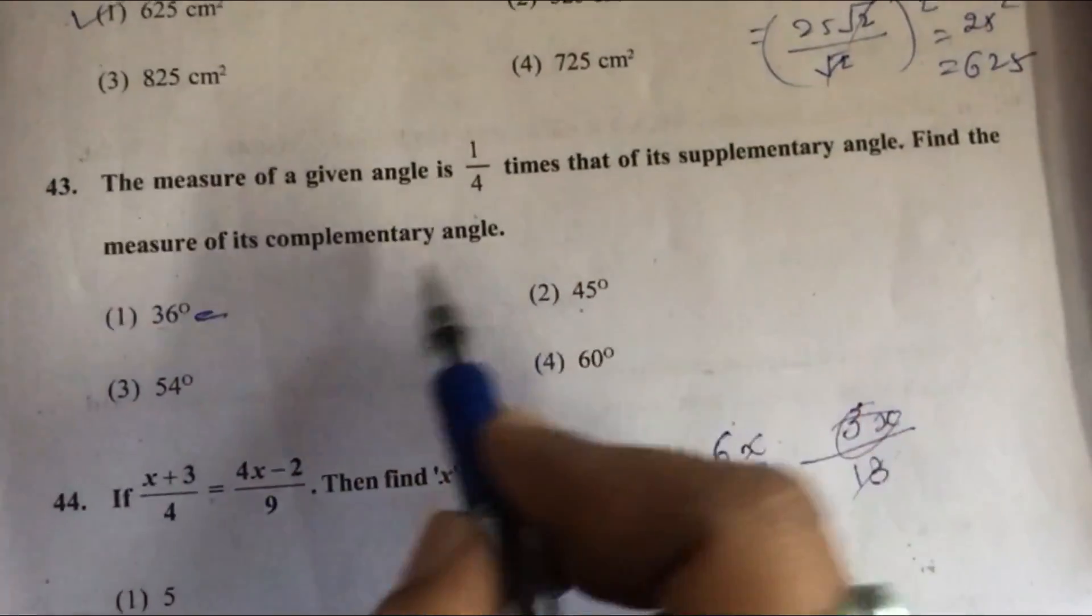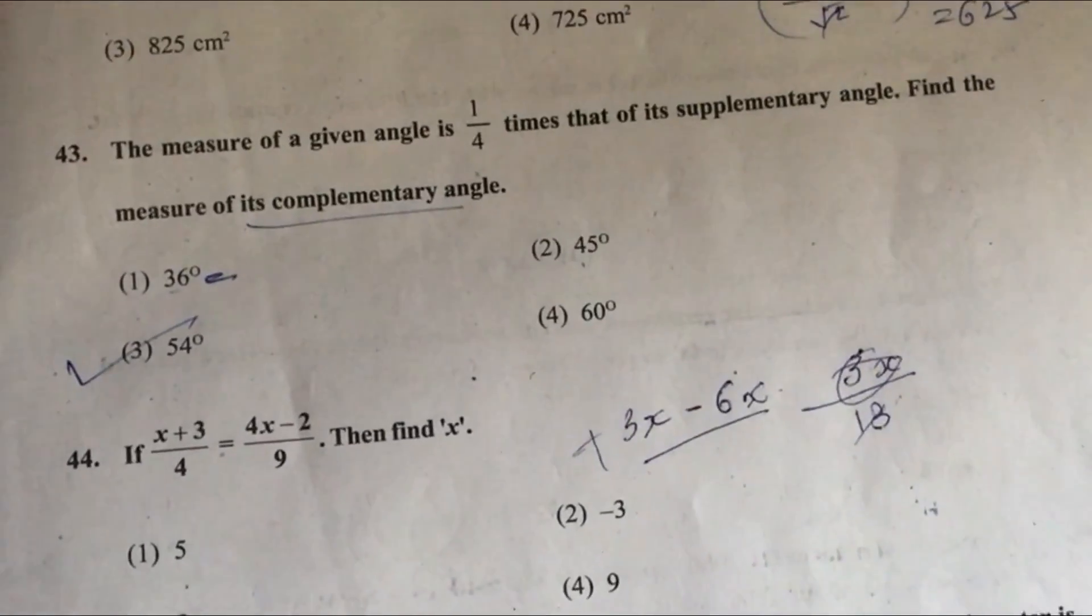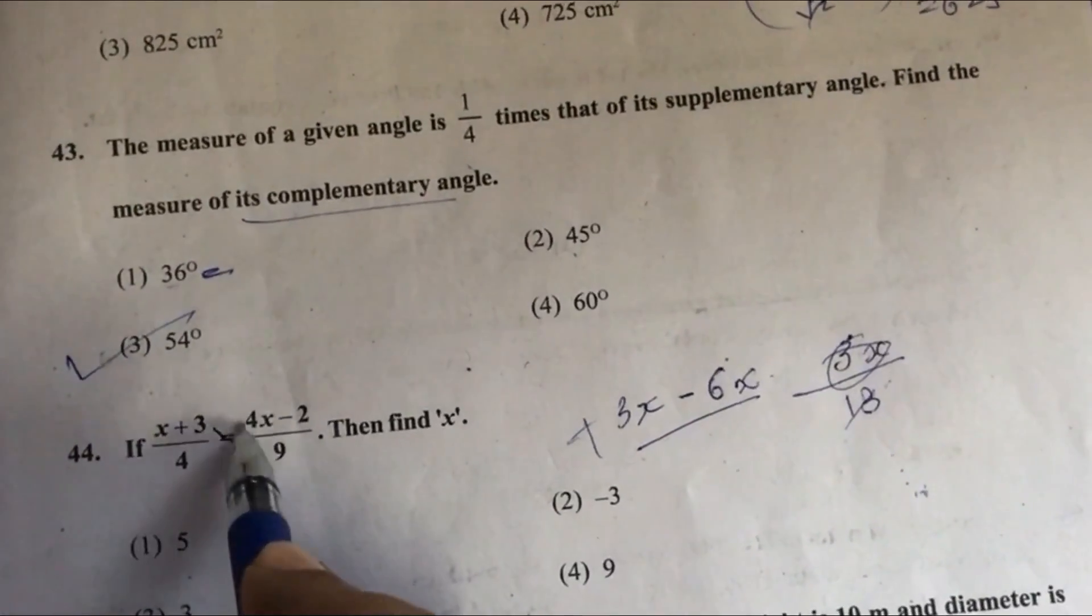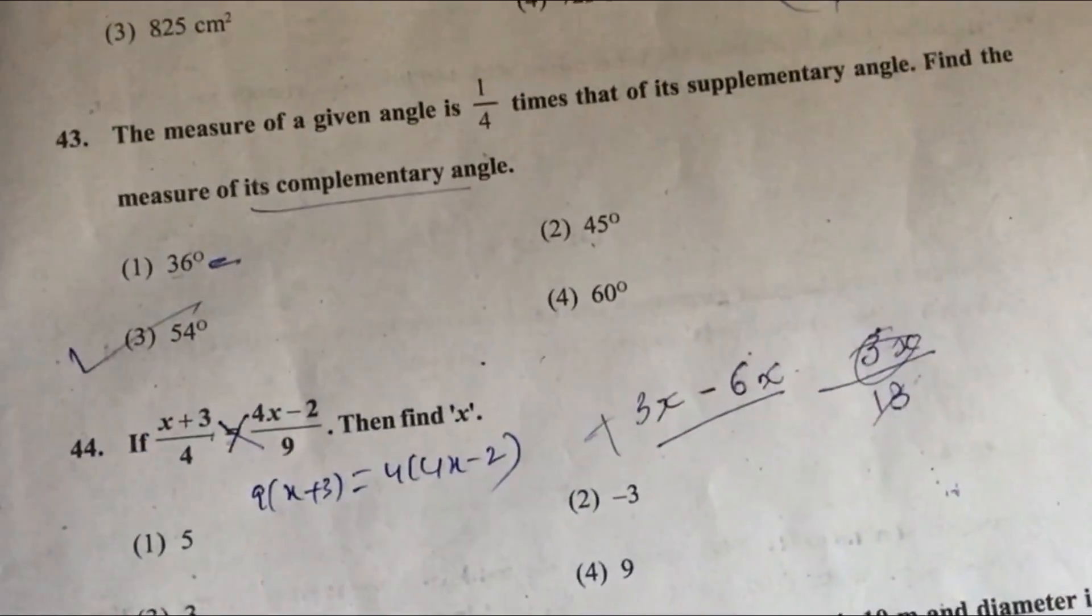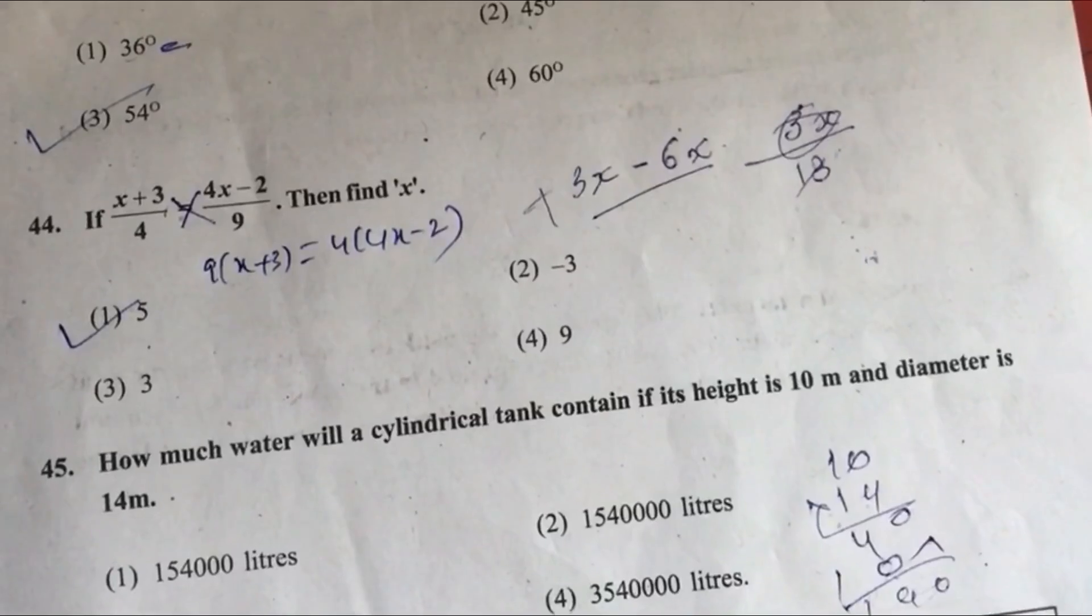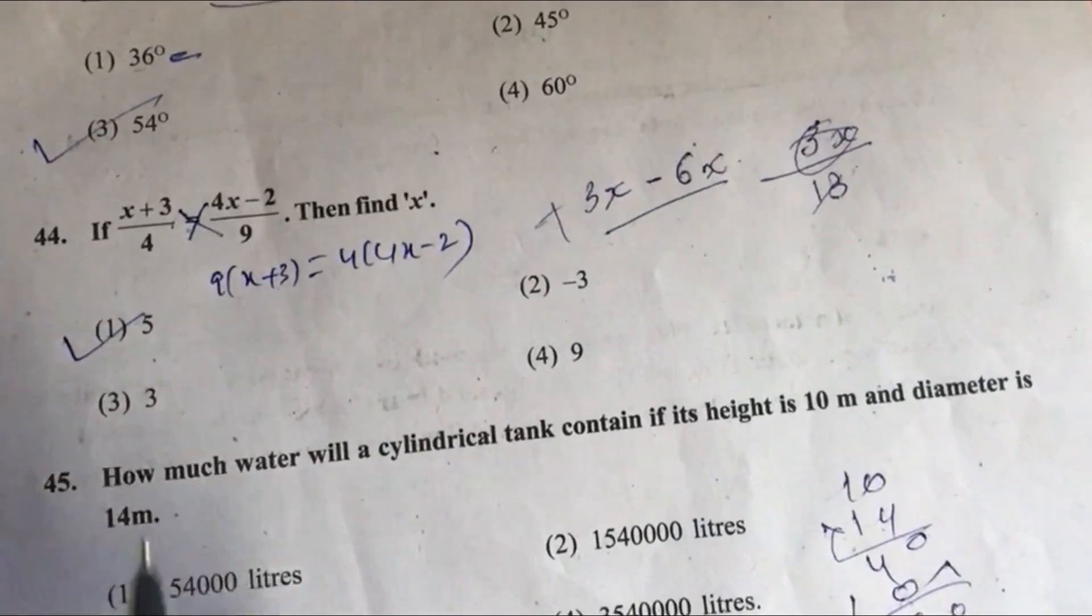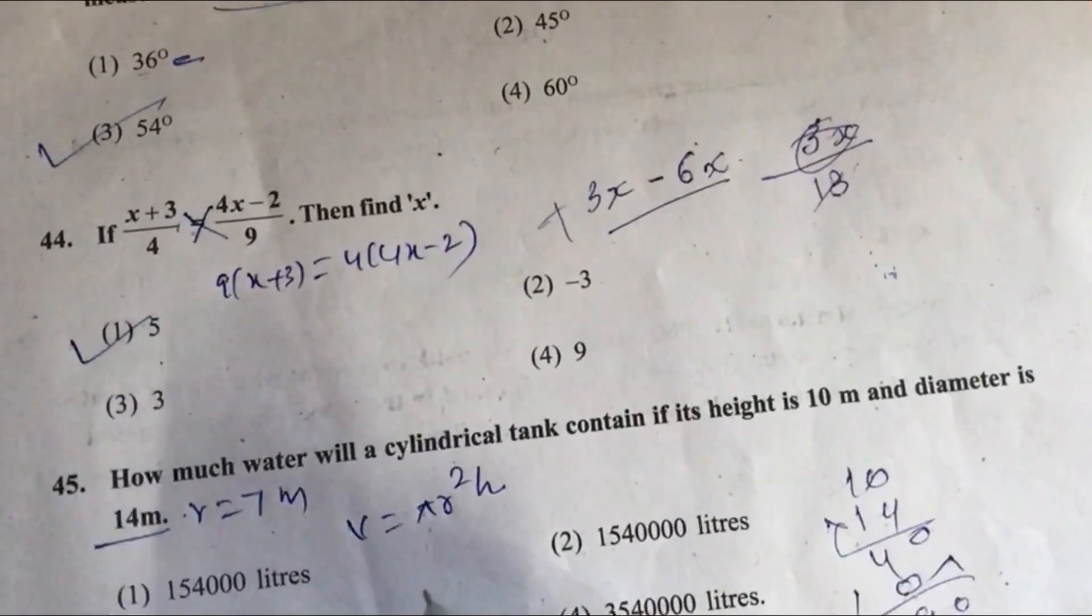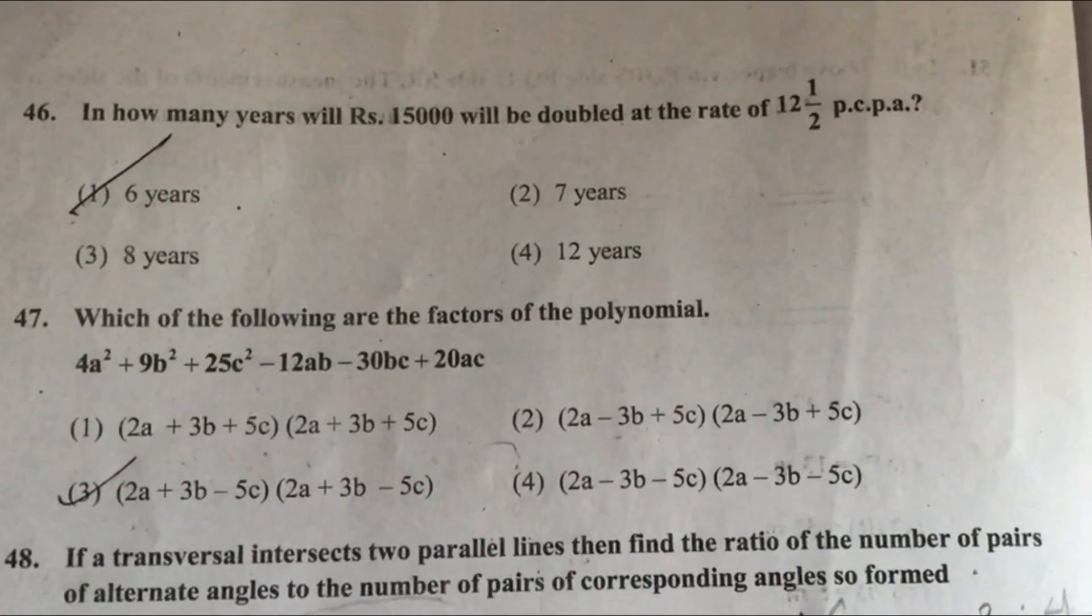Question 44: If x plus 3 upon 4 equals 4x minus 2 upon 9, then find x. We have to solve by cross multiplication. It gives 9 times x plus 3 equals 4 times 4x minus 2. After solving we will get x equals 5, option 1. Question 45: How much water will a cylindrical tank contain if its height is 10 meter and diameter is 14 meter? Diameter 14 meter, so r equals 7 meter. Volume of cylinder is pi r square h. When we solve, we will get option number 2 as correct answer.